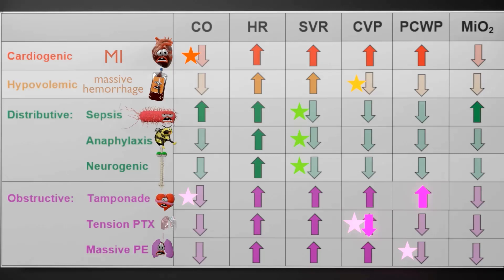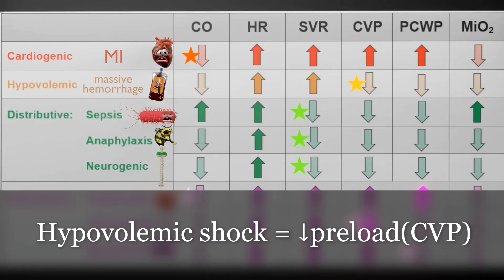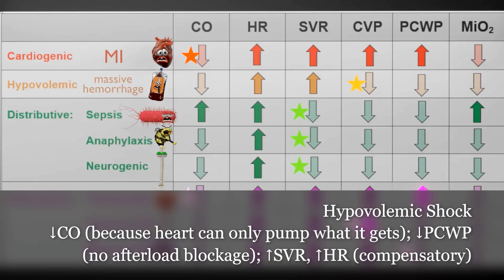In all forms of hypovolemic shock, there's one parameter to focus on. There's reduced fluid, reduced blood, and therefore the problem is in the preload on the heart — that is, central venous pressure. CVP is basically synonymous with preload. So when there's reduced fluid, there will be reduced preload, i.e. low CVP. Since preload is low, cardiac output will also be low because the heart can only pump out as much as it gets. PCWP will also be low. But just like in cardiogenic shock, due to the reduced cardiac output, there will be a compensatory increase in systemic vascular resistance as well as in heart rate.